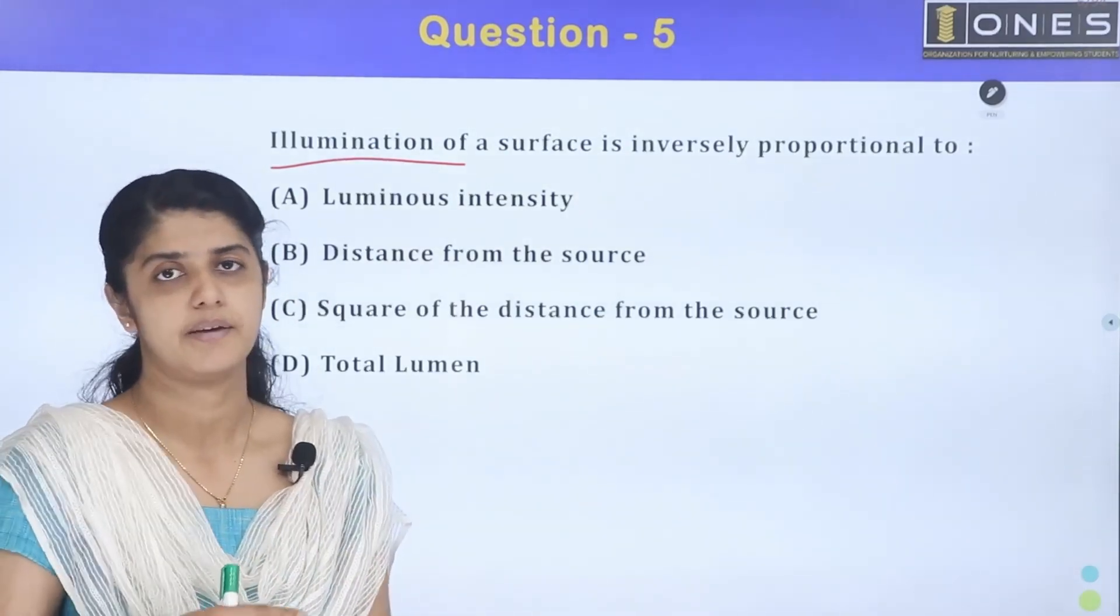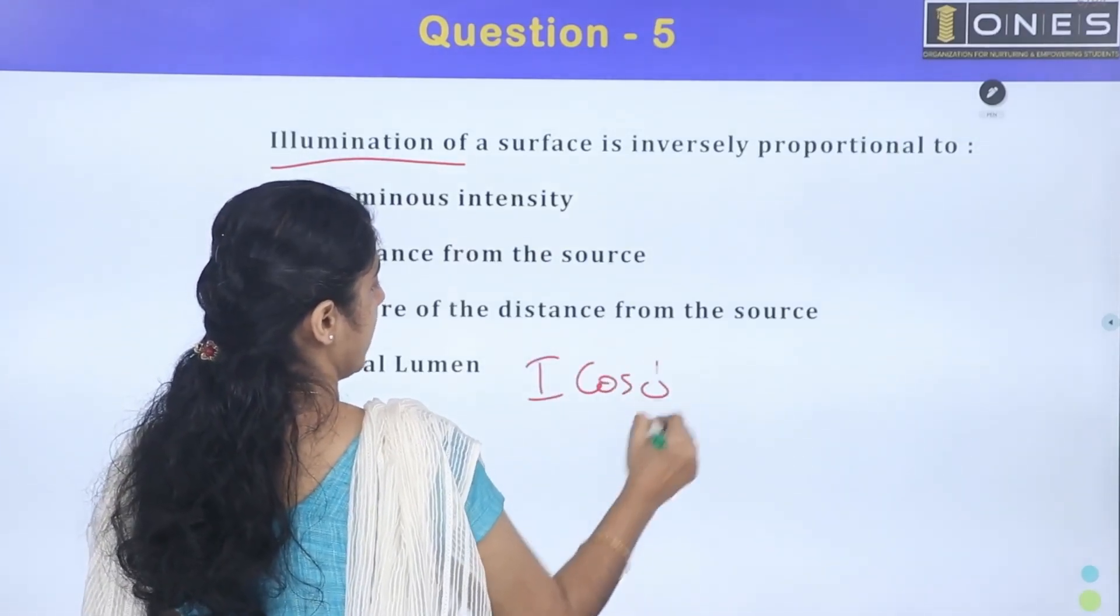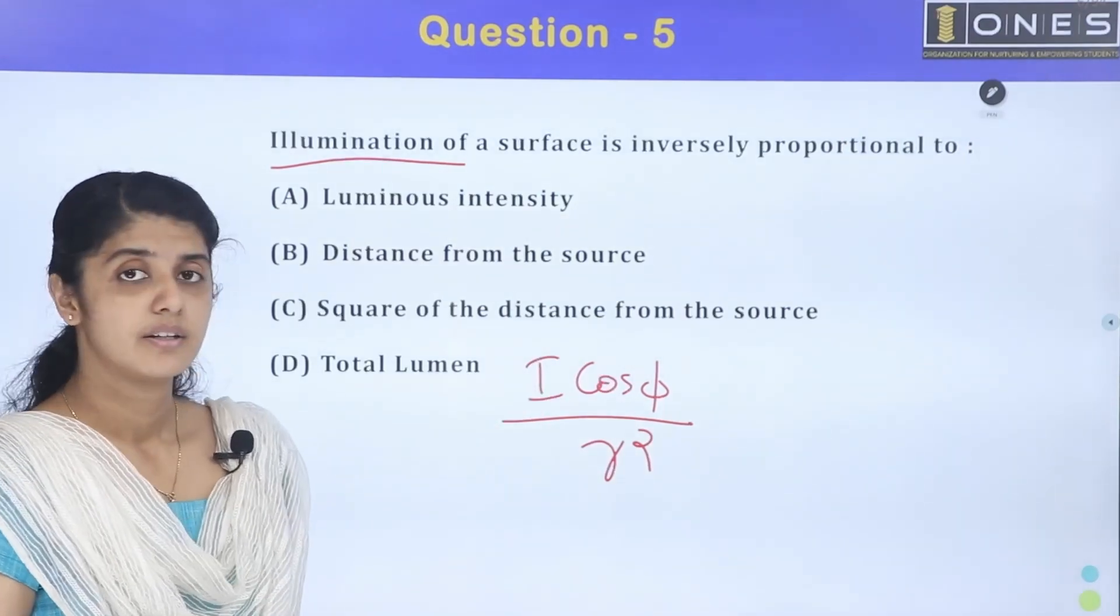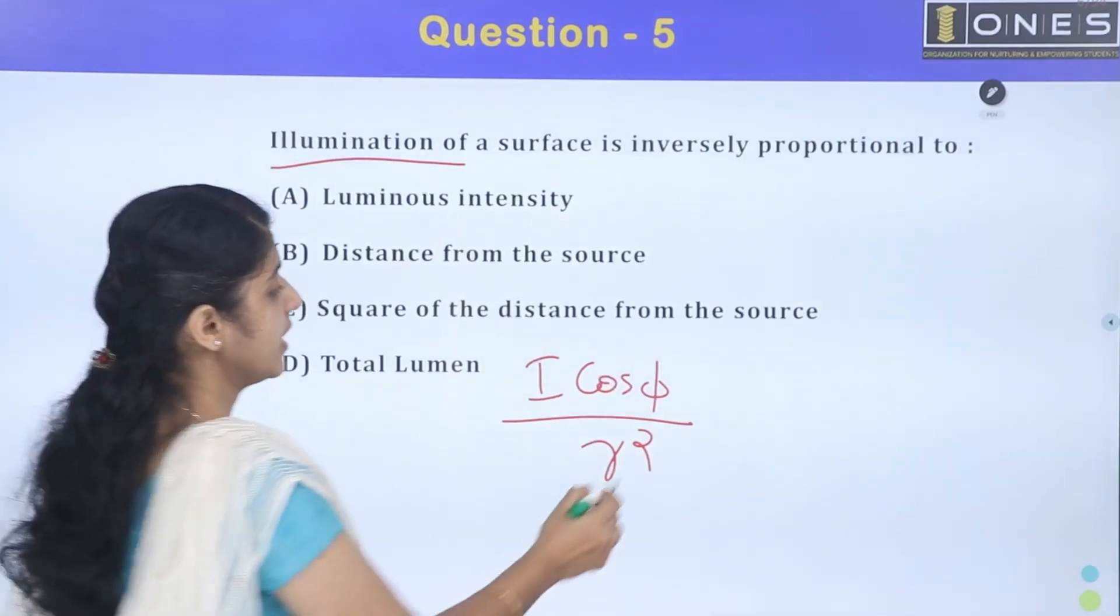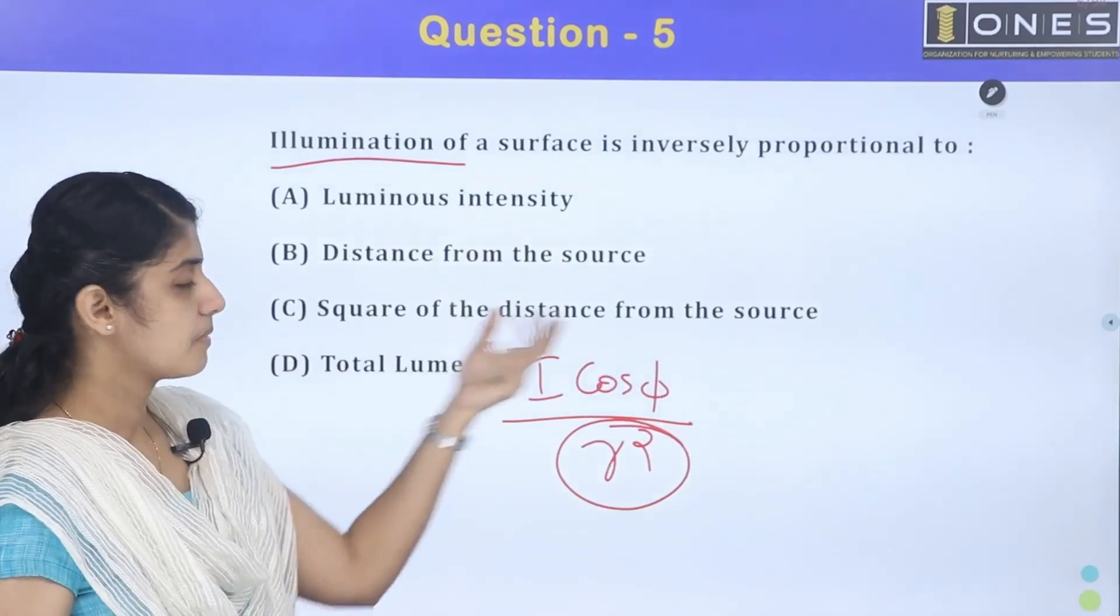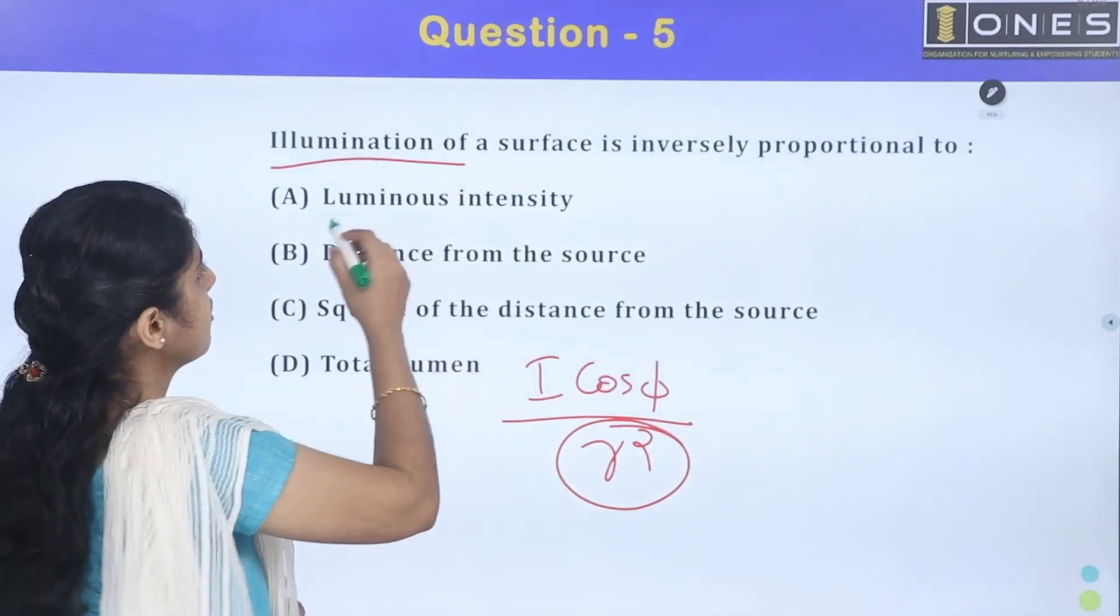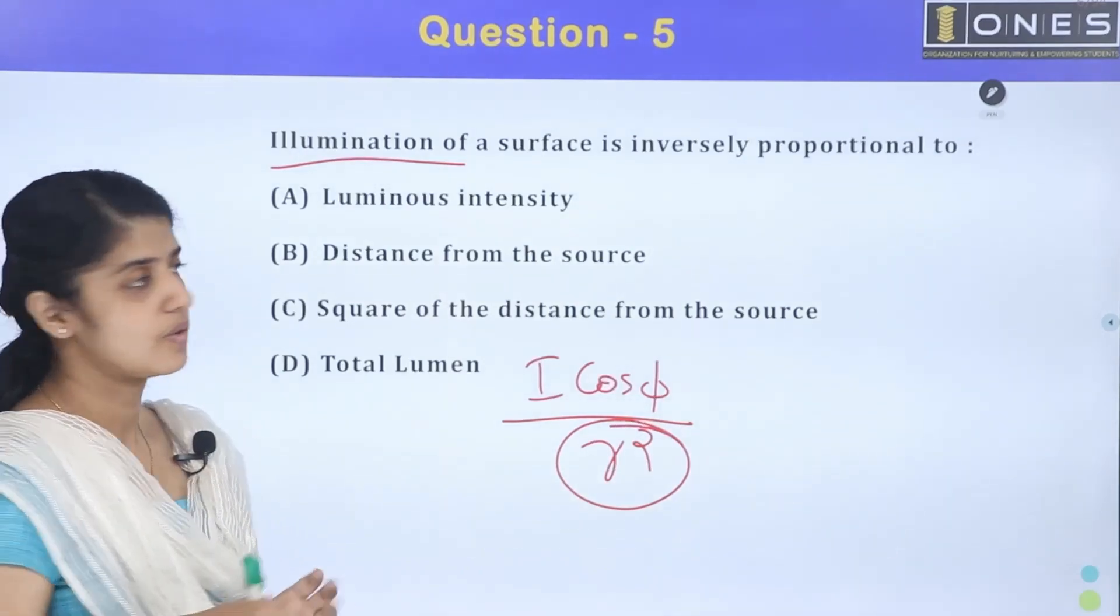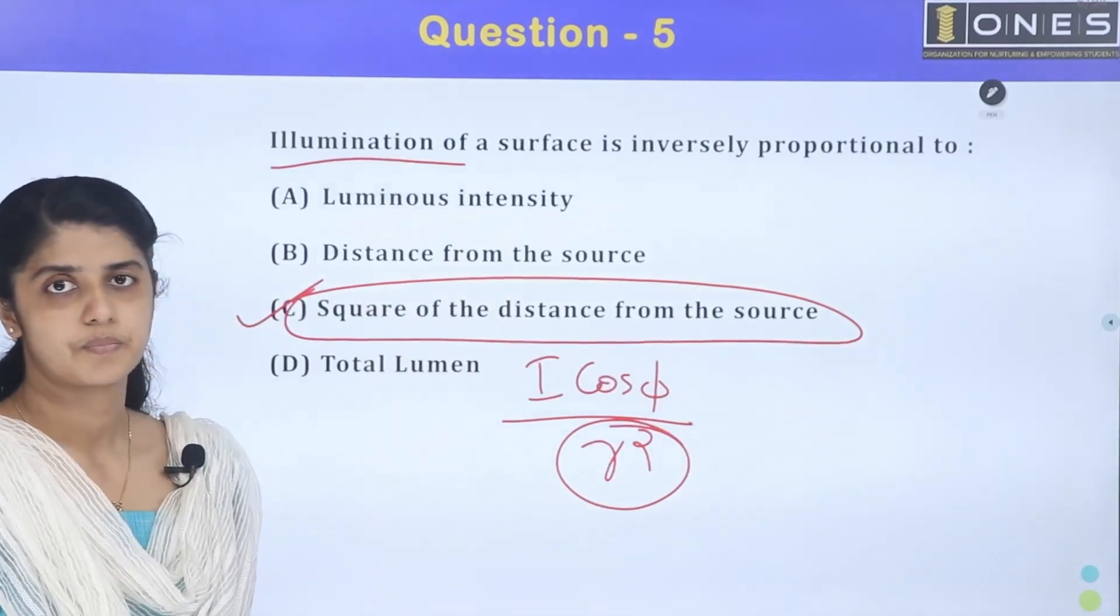Lambert's cosine law states that illumination E equals I cos phi divided by r square. Therefore, illumination is inversely proportional to the square of distance from source. This is the correct answer.